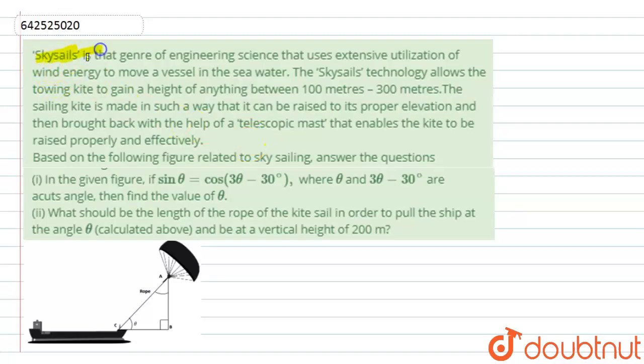Here we have given sky cells, that genre of engineering science that uses extensive utilization of wind energy to move a vessel in the sea. The sky cells technology allows the towing kite to gain a height of anything from 100 meters to 300 meters.